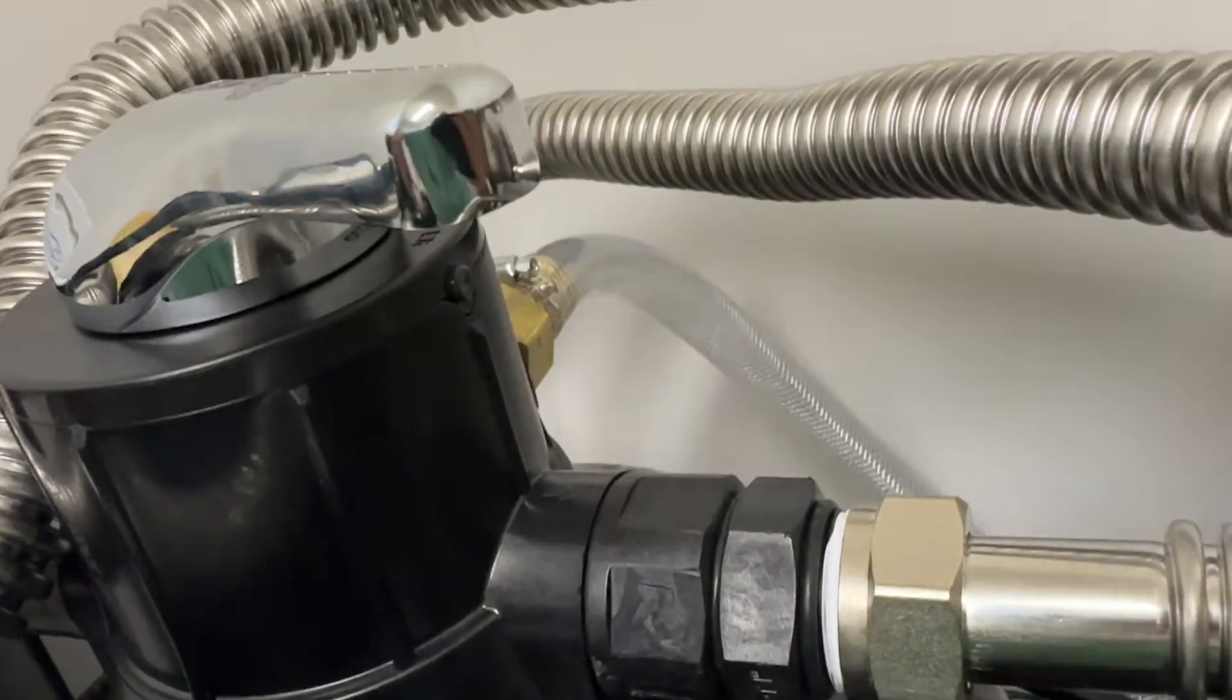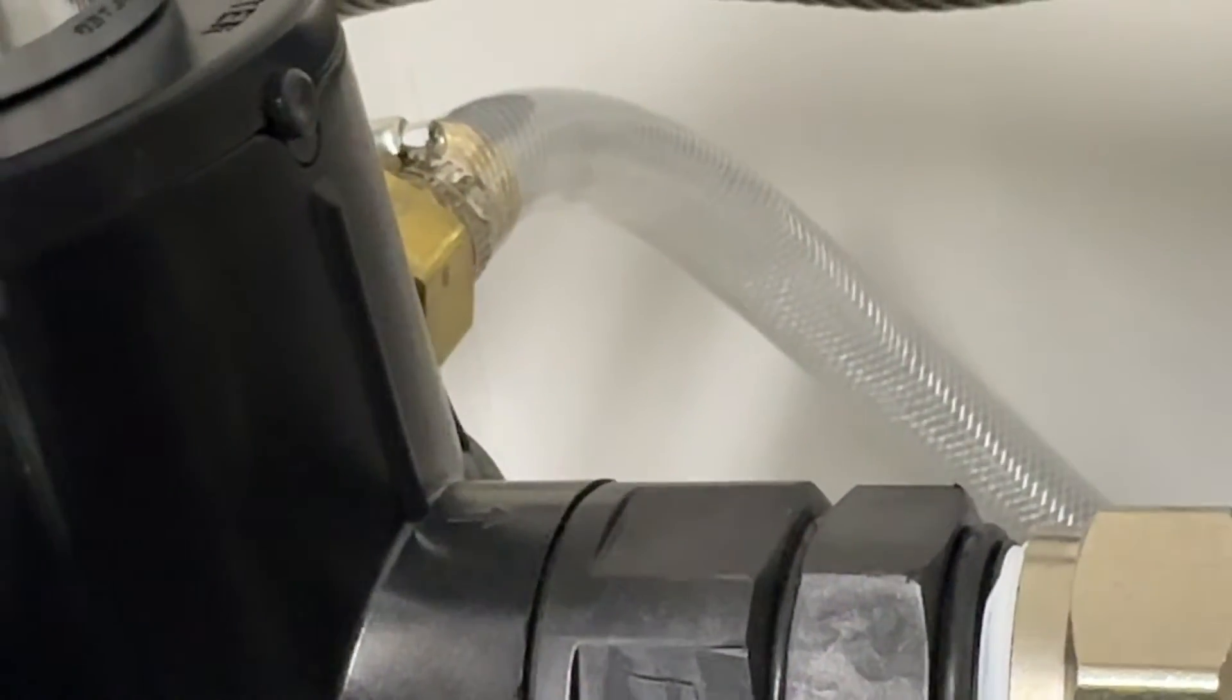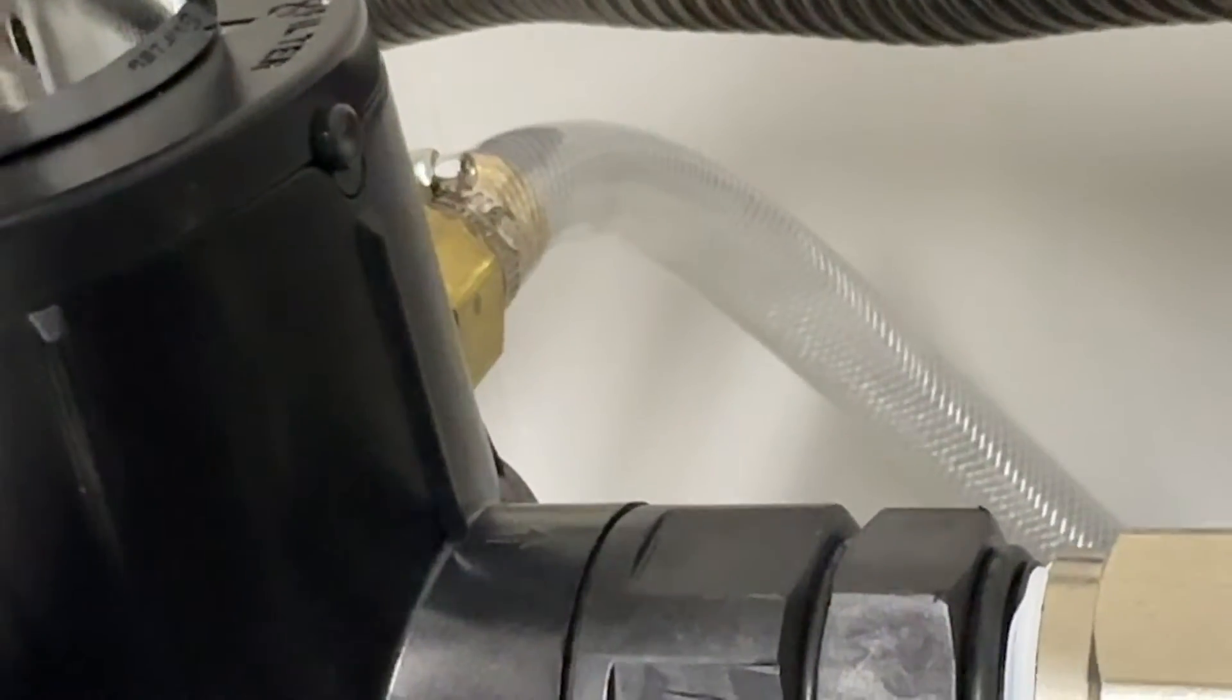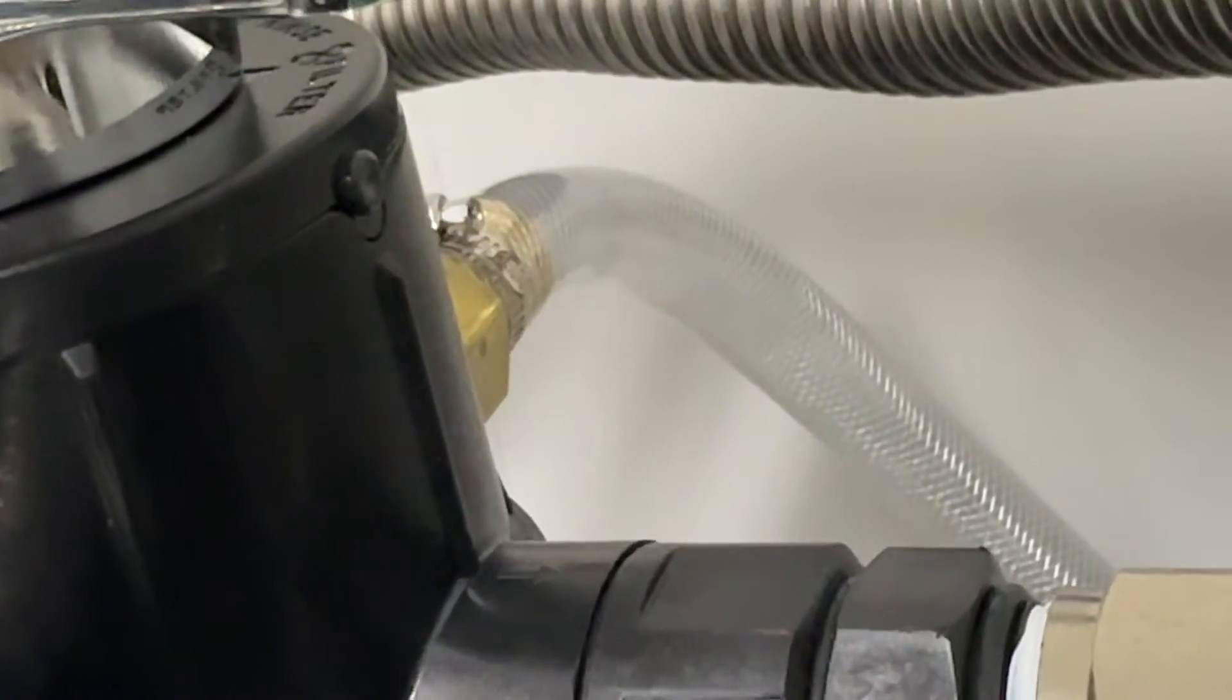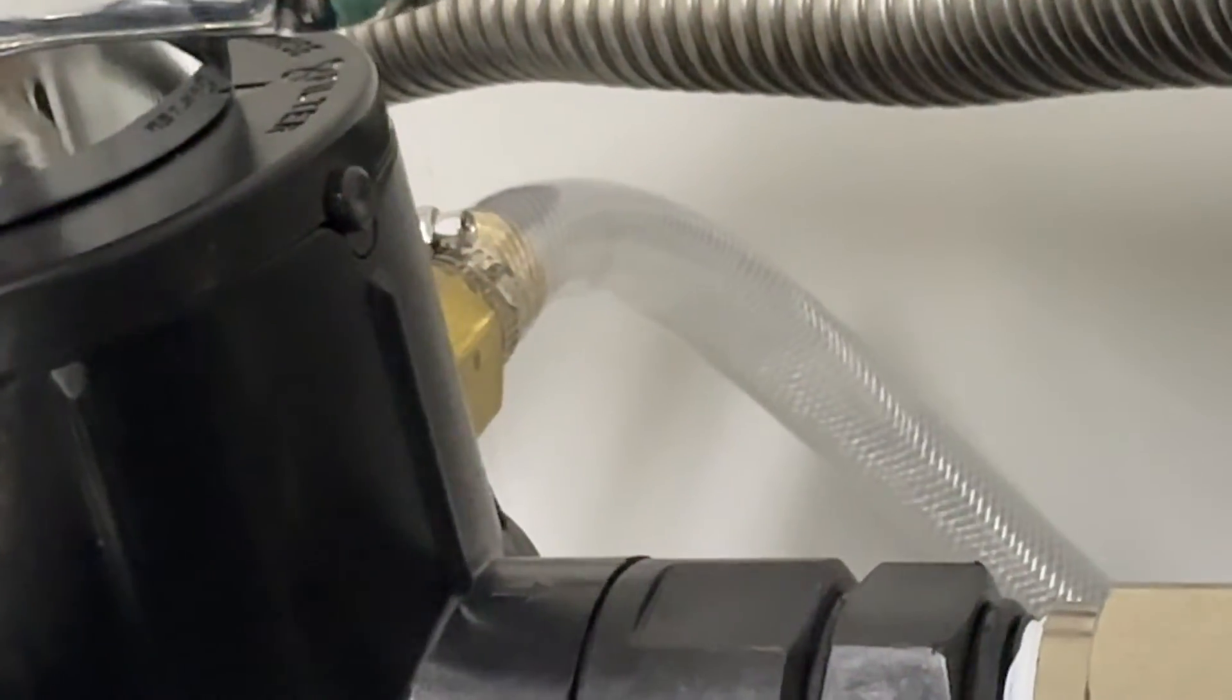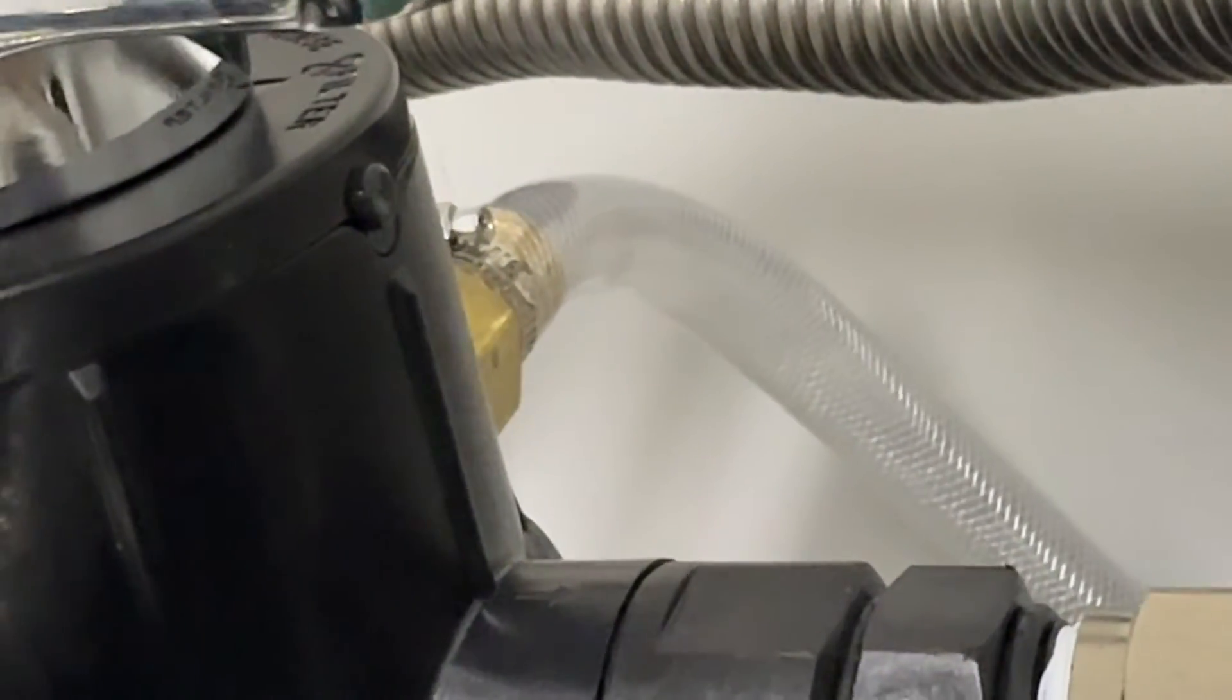Starting to clear up almost there. It has a little bit of a gray hint to it. I'm gonna let it go for another 30-40 seconds and then I'll start the timer for three minutes. You want to let it backwash for three minutes after it has cleared up all the way.